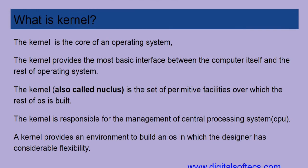What is kernel? The kernel is the core of an operating system. The kernel provides the most basic interface between the computer itself and the rest of the operating system. The kernel, also called nucleus of operating system, is the set of preemptive facilities over which the rest of operating system is built. The kernel is responsible for the management of central processing unit, called CPU.